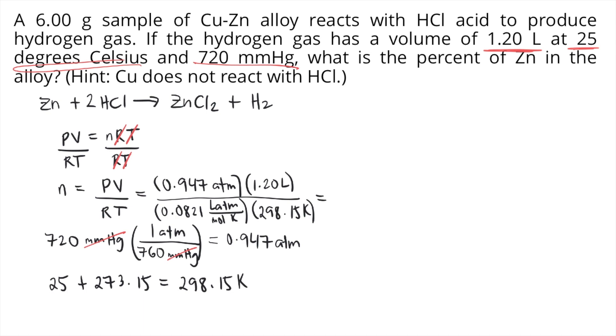The units cancel out: atm cancels, Kelvin cancels, liter cancels, and the remaining unit is moles. Solving in the calculator: 0.947 × 1.20 / (0.0821 × 298.15) = 0.0464 moles of hydrogen gas.